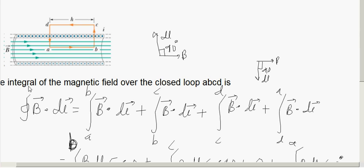So first we found out what is the line integral of the magnetic field over the closed loop ABCD. So you divided the whole loop into four sections.